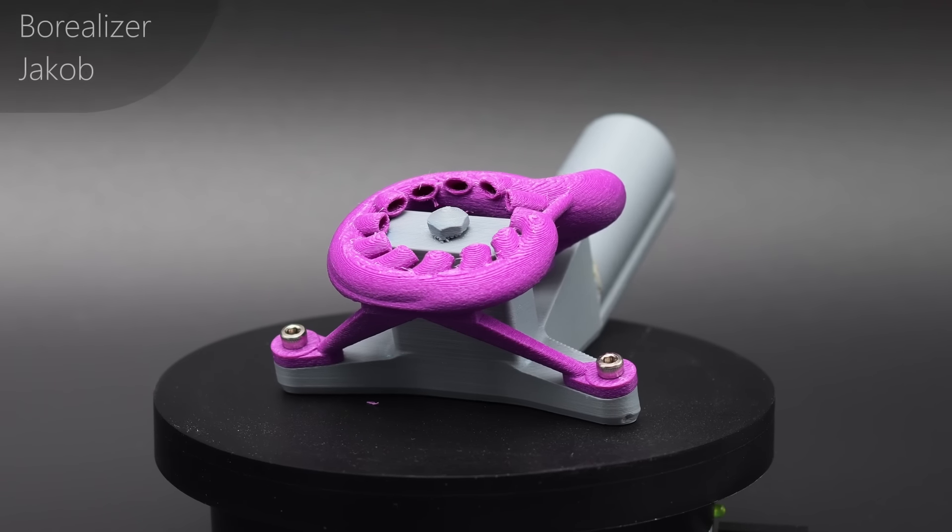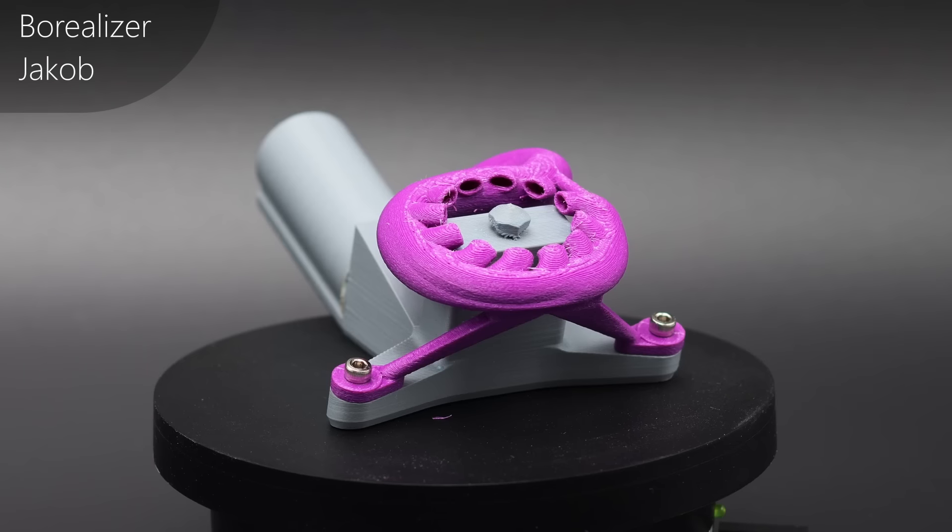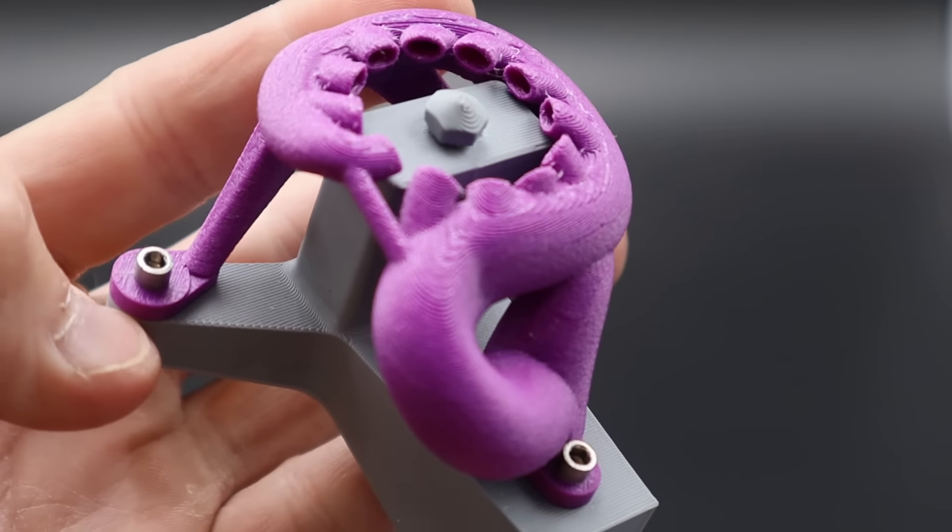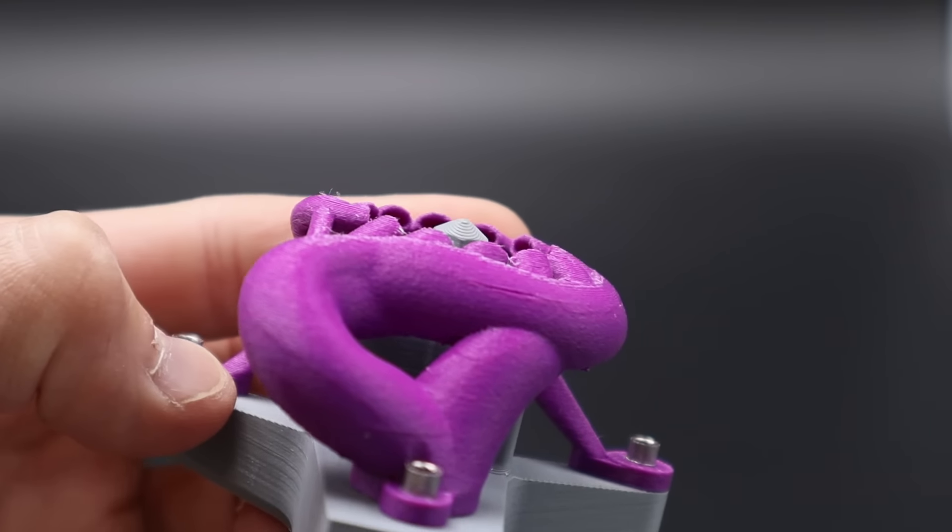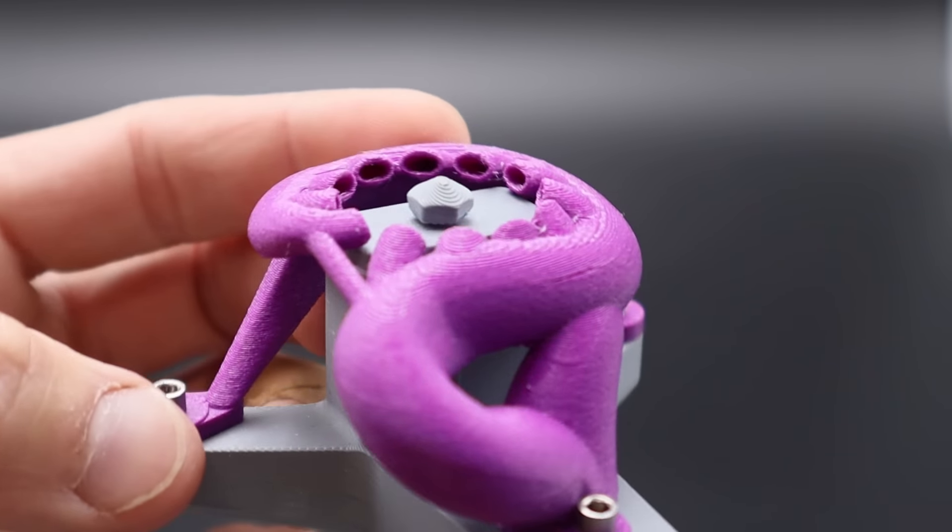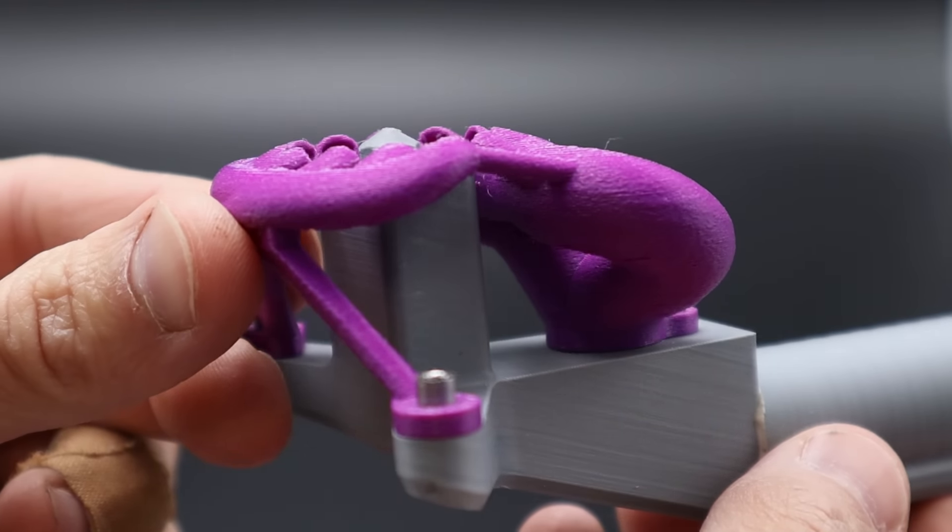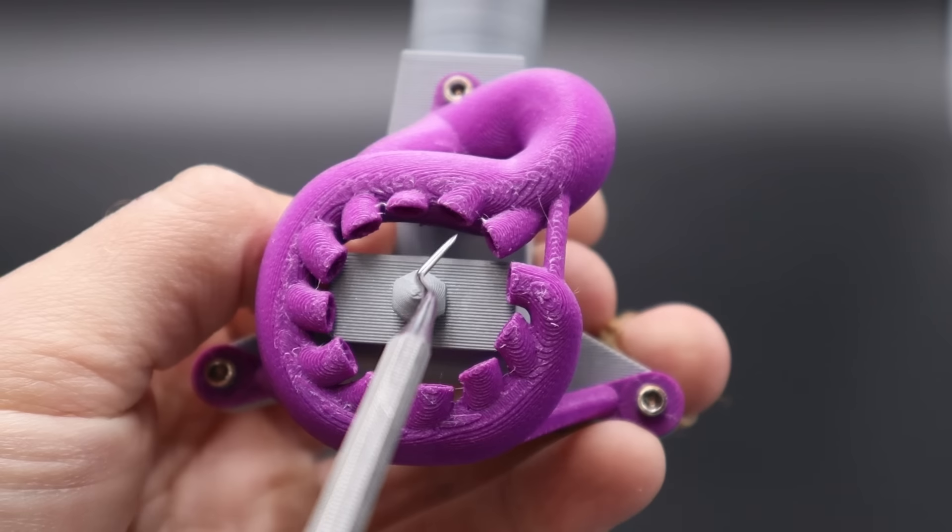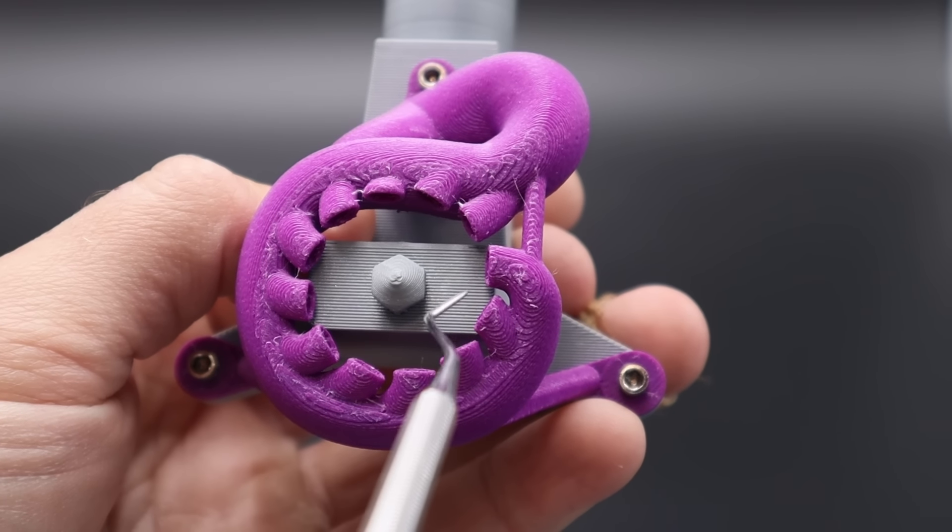Next up we have the Borealizer by Jacob. This one is a different take on the wraparound design and it also comes in really close to the nozzle. This one looks a little bit like a fern. The duct has 12 mouths, each with an area of 9.6 millimeters squared, bringing it to 115 millimeters squared, just barely above the inlet size. So this one should be able to take advantage of the supply air with minimal restriction.